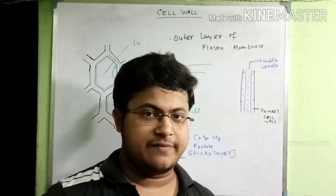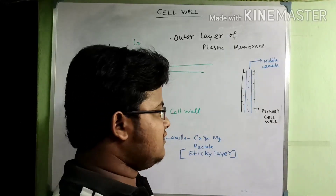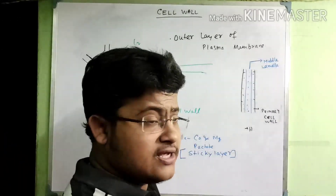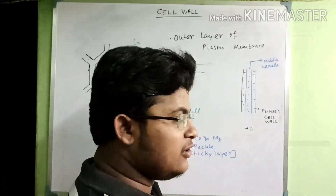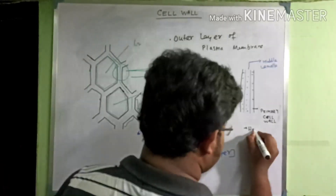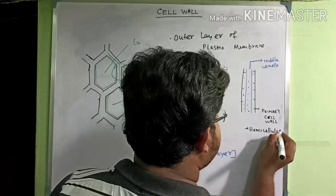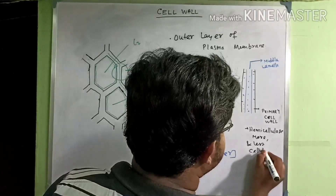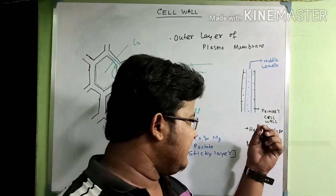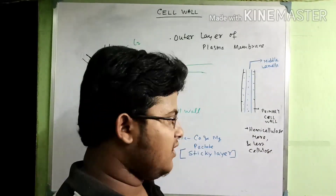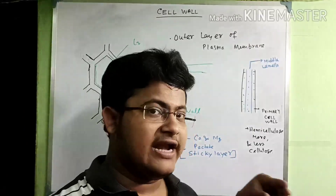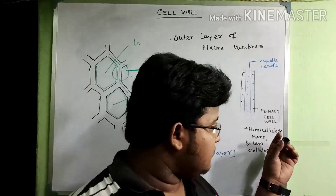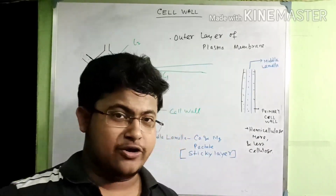What is the composition of the primary cell wall? The primary cell wall is composed of cellulose and hemicellulose. Hemicellulose is more abundant in the primary cell wall and cellulose fiber is less. As learned in the previous video, hemicellulose is made up of xylulose, arabinose, galactose, and mannose.